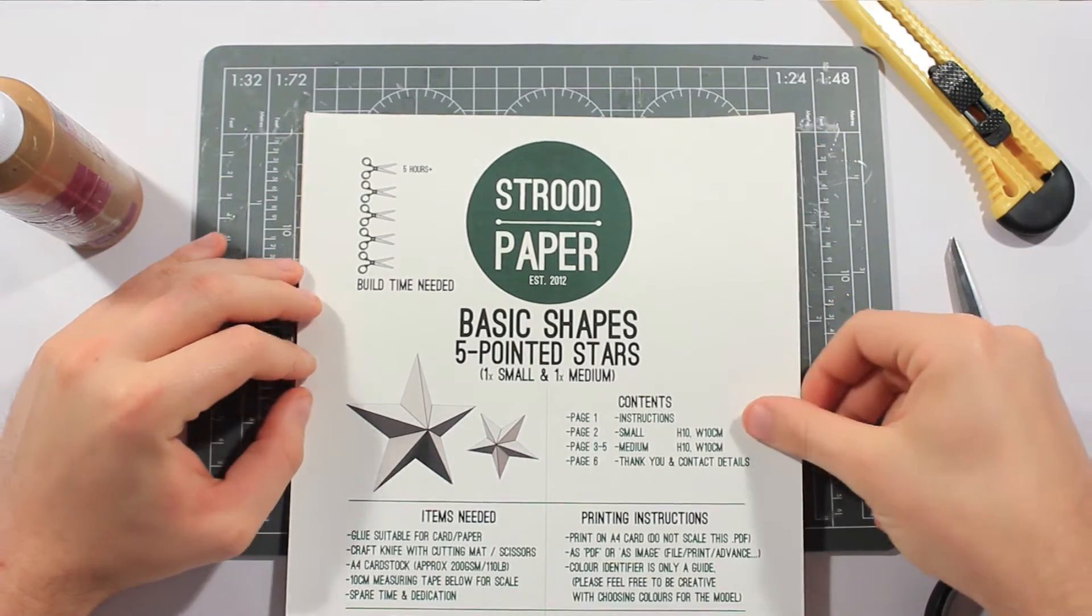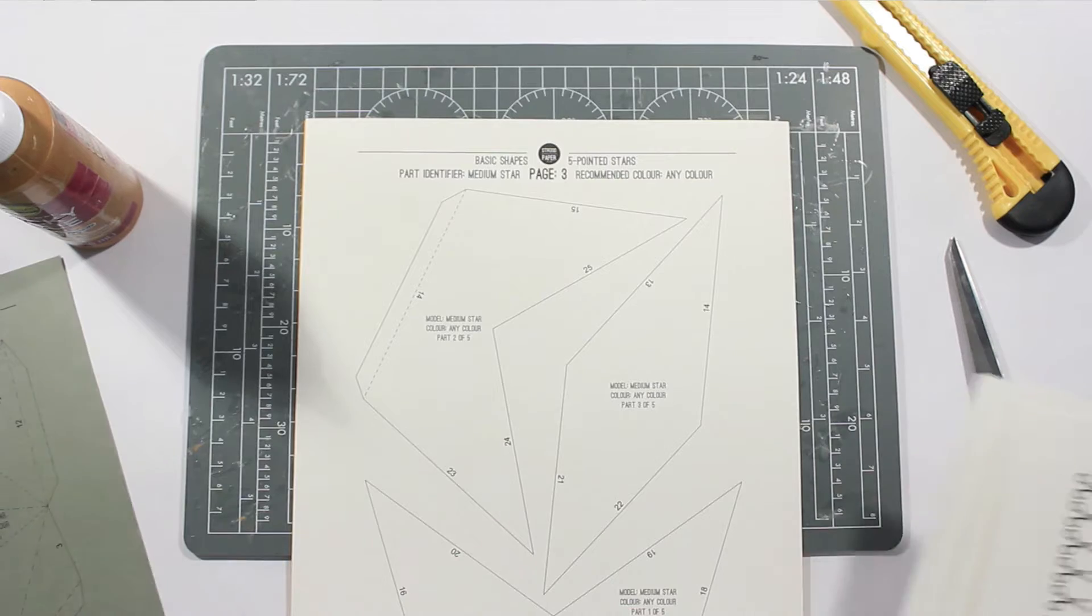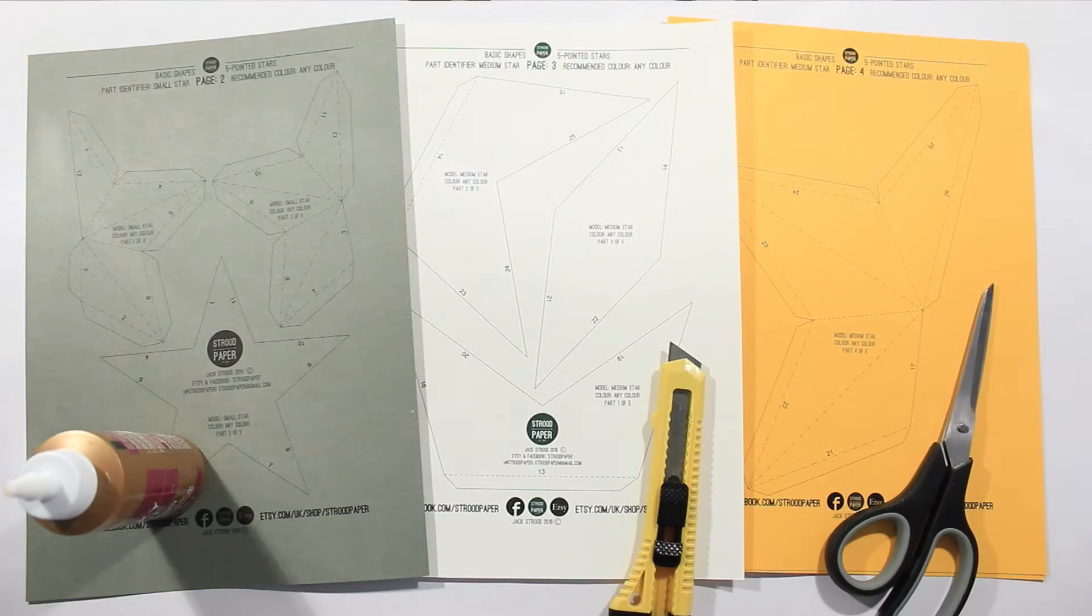So you can print them out on white or you can print them out on grey, you can print them out on yellow. So I'm going to do all of them. As you can see I've printed them out on grey, white and yellow.